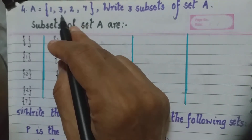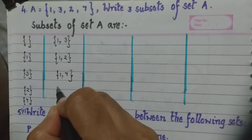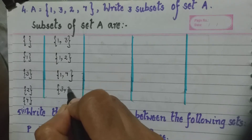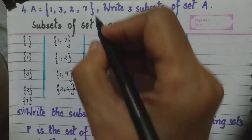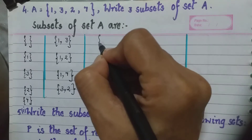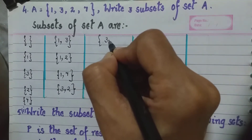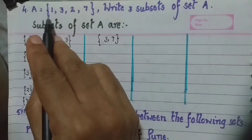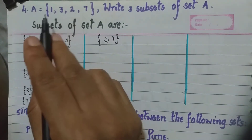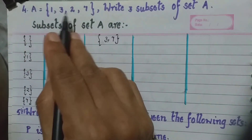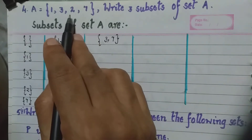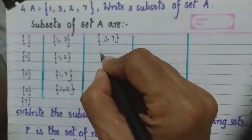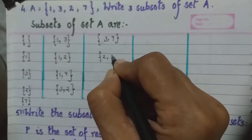Starting with element 3: we have {3, 2} and {3, 7}. So let us write {3, 2}, then {3, 7}. Now we take {2, 7}. With two elements we have completed.